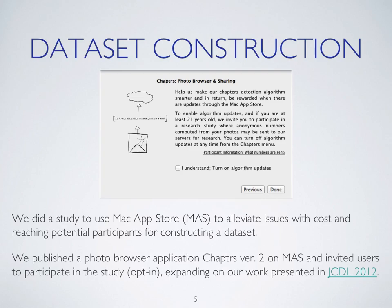We published a photo application called Chapters, which was presented last year at JCDL 2012. We published it on the Mac App Store and invited users to participate in the study as an opt-in. Users were shown a dialog box asking if they wanted to share their data with us. We made this an opt-in study because of necessary privacy considerations, and our Institutional Review Board (IRB) approved our study with this in mind.